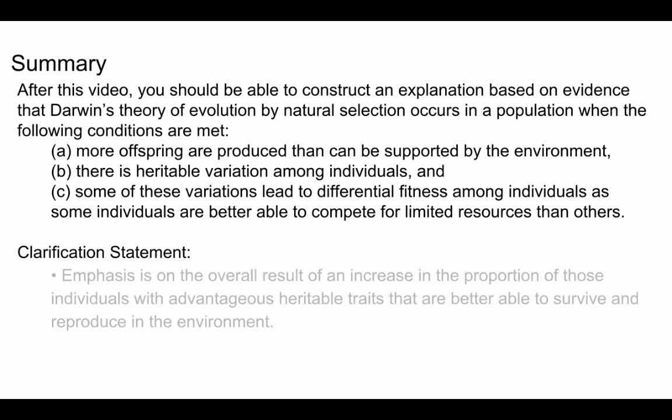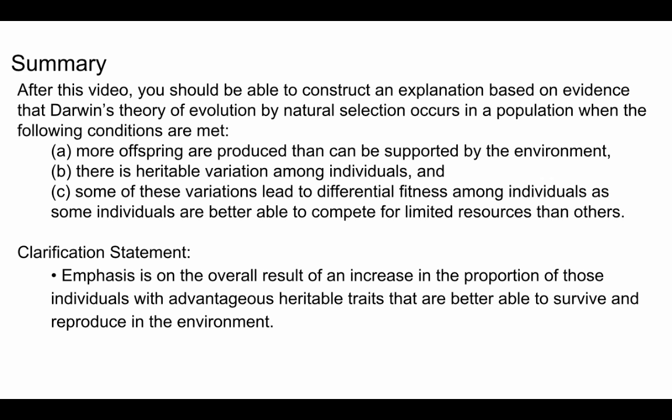A couple of clarification statements: the overall result is an increase in the proportion of individuals with advantageous traits that are better able to survive and reproduce. When we have competition within one generation and only certain traits are favorable, those offspring are not all necessarily going to have the same trait — there's going to be variation in the next generation. Even though the parents had a favorable trait, not all offspring will have it, so we'll end up with a bell curve of variation. That's really important because the environment does not stay the same, and a future shift means you still need some individuals that have different traits.